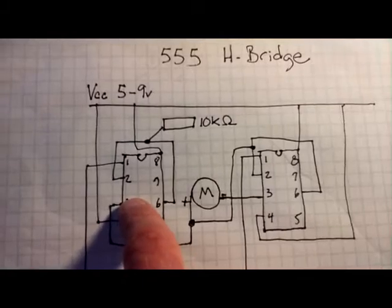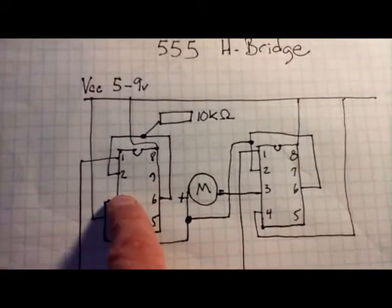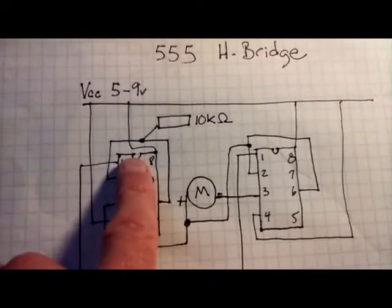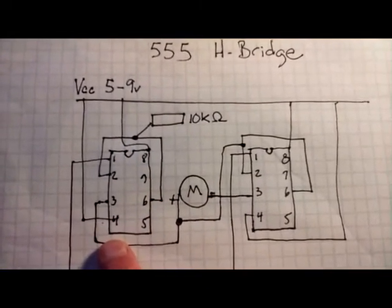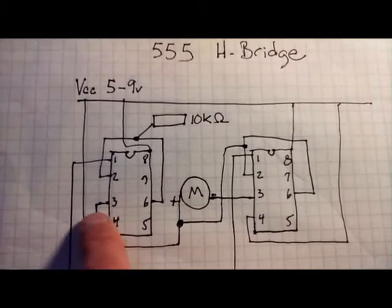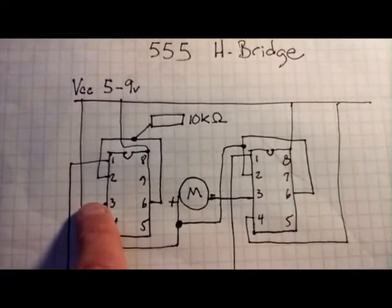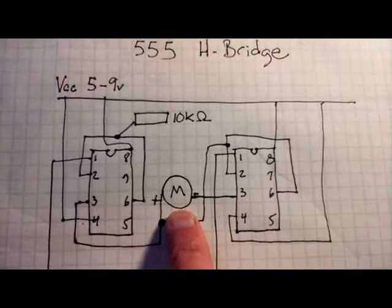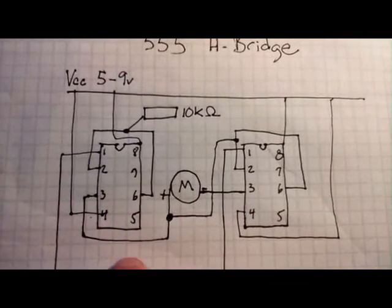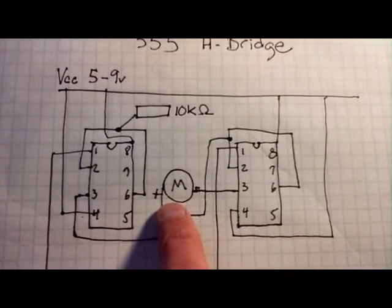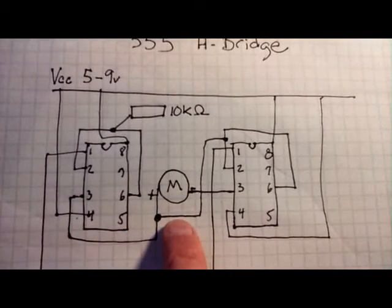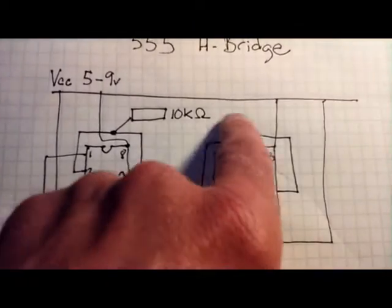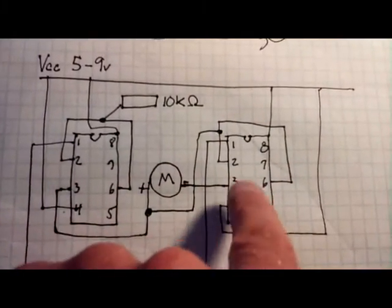So on the first chip, the 10K is interfacing with pins 2 and 6. And one goes to ground, 8 and 4 go to voltage in. The output, pin 3, is going into the positive lead. It doesn't really matter if positive or negative, it's just going to spin in a different direction each way. But the output goes into the positive pin on the DC motor, as well as going into the connection of pins 2 and 6 on the second chip.